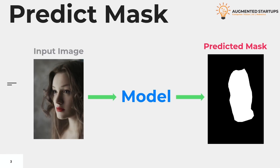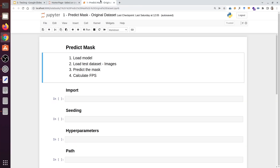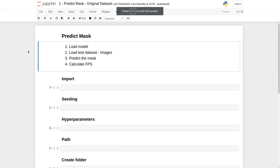This video will teach us how to predict the mask for the test images. Here we have the input image, and we'll give the image to the model and predict the mask. We have a binary mask for the input image. After that, we will move on to the Jupyter Notebook.